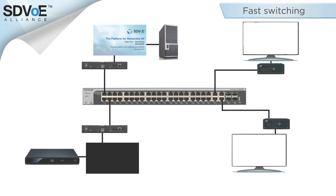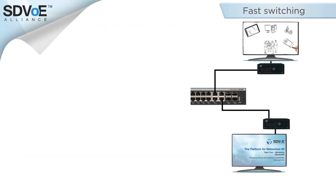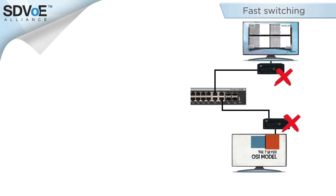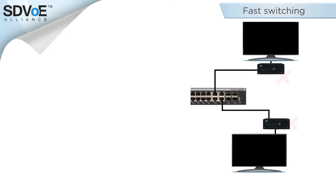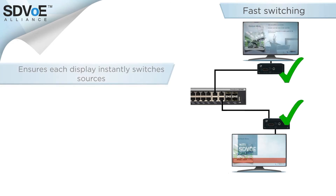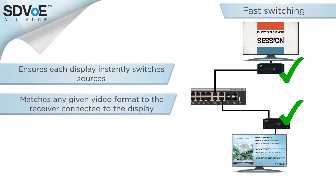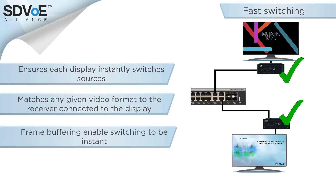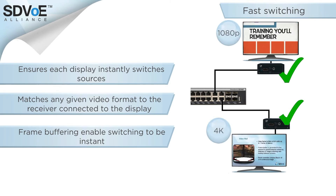Fast switching is very important for applications where source switching happens regularly. No one wants to see a blank screen while the display works out how to display the image. SDVoE has a fast switching feature which, when applied, ensures each display instantly switches sources. To achieve this, SDVoE matches any given video format to the receiver connected to the display, which in turn outputs the image to the preferred resolution of that display. Frame buffering is used, but only one to two frames of latency will be added, making this an ideal solution for residential and presentation applications.